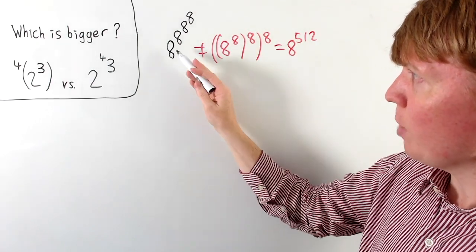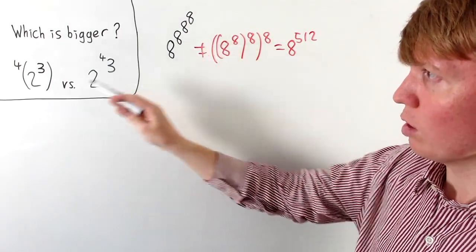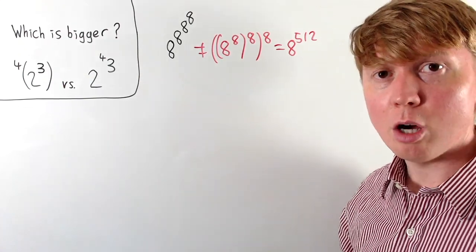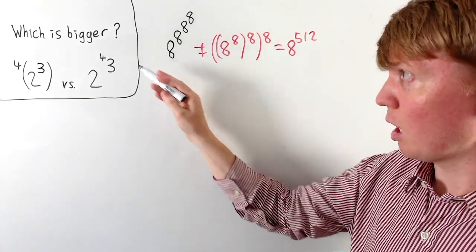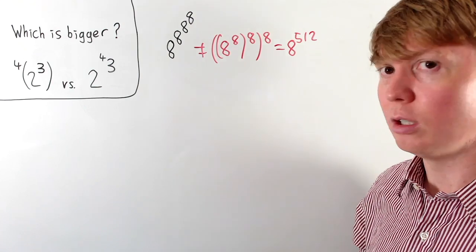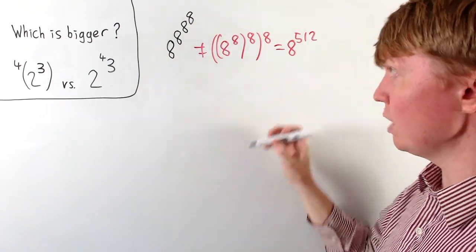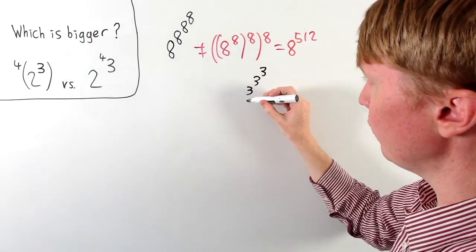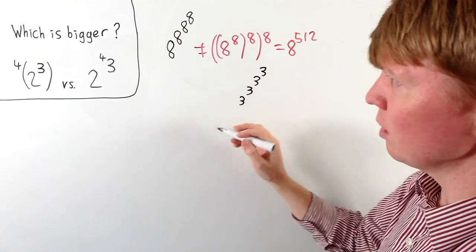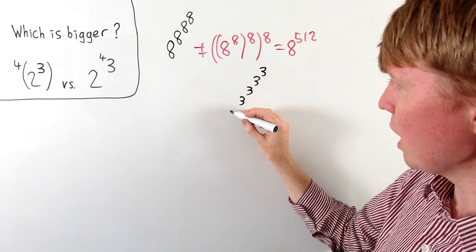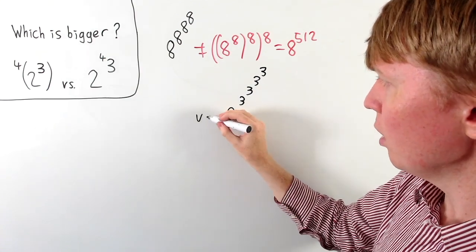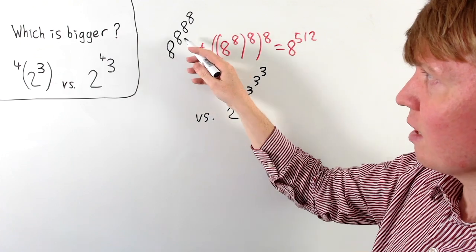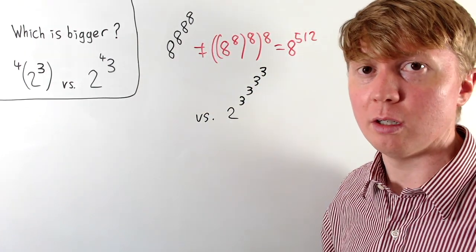So to compare the left-hand expression to the right-hand one: on the right-hand side, we've got a tetration of order 4 for the number 3. We'd write this as a stack of four 3s, and then finally raise 2 to this power. We're now comparing this to our eight to the eight to the eight to the eight expression.